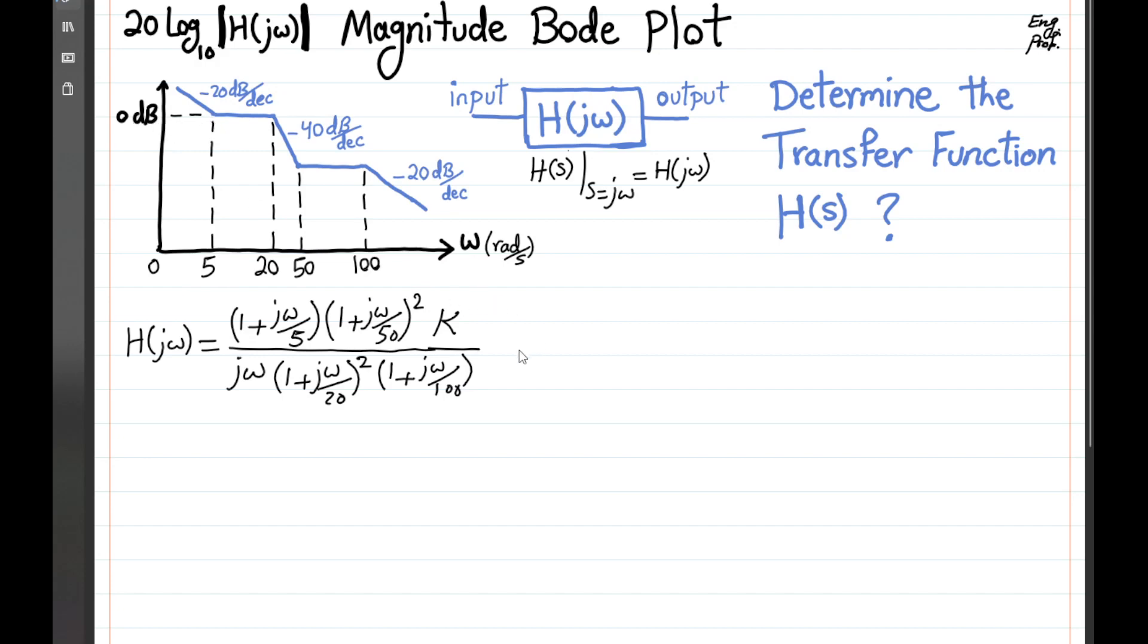which we need to find at 5 radian per second. We can see that the value of the magnitude in dB should be 0. So if we use omega equal to 5 radian per second, then h of j5 equals, substituting everything with 5, we end up with k, which we need to find, and 1 plus j5 divided by 5, and 1 plus j5 divided by 20 squared.